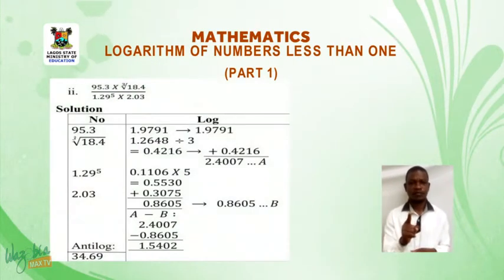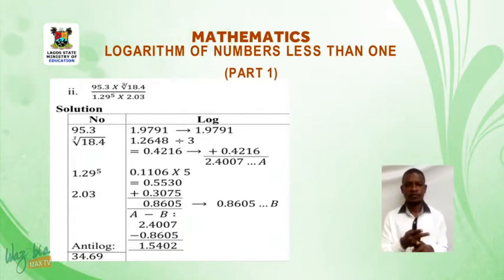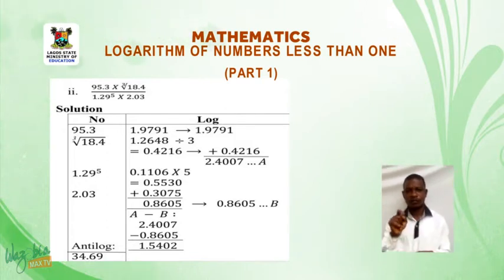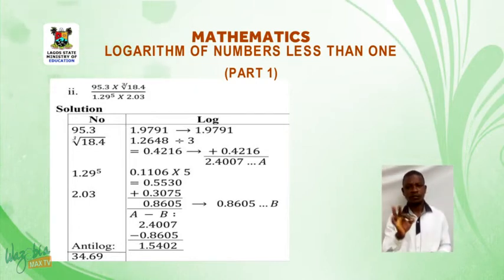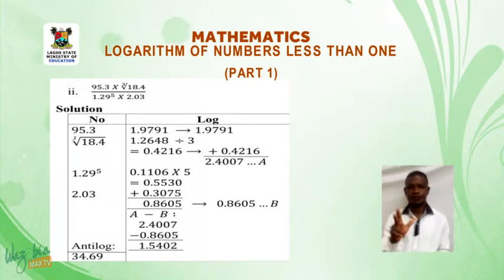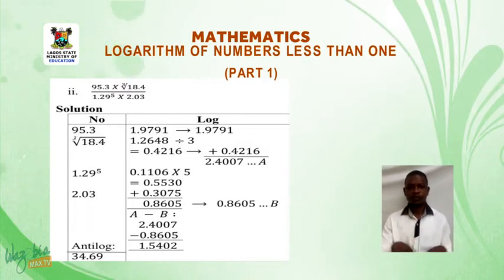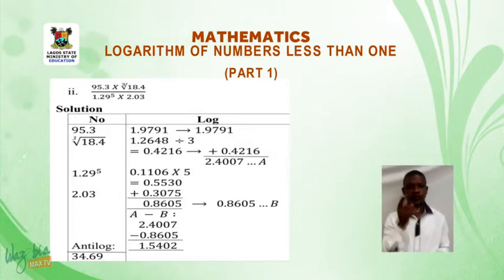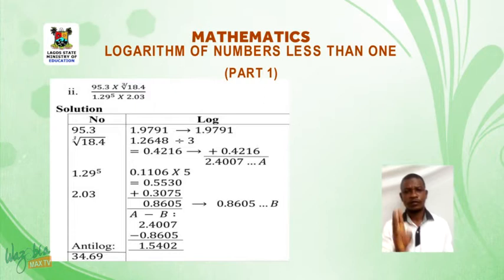Now the second one is 95.3 times 18.4 cube root of 8 all over 1.29 raised to power 5 times 2.03. Solution: 95.3 from the log table gives us 1.9791. And the cube root of 18.4 from the log table gives us 1.264 divided by 3 because of the power of 1 over 3 or cube root. This gives us 0.4216.